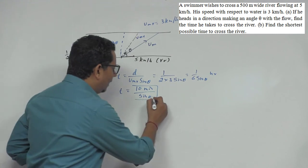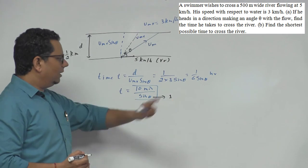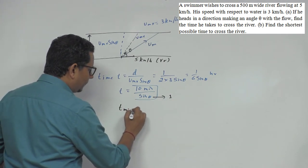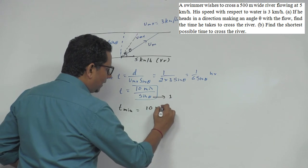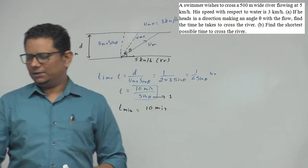Second part is: find the shortest possible time to cross the river. Now if you want the shortest possible time, then in that case your second part is...